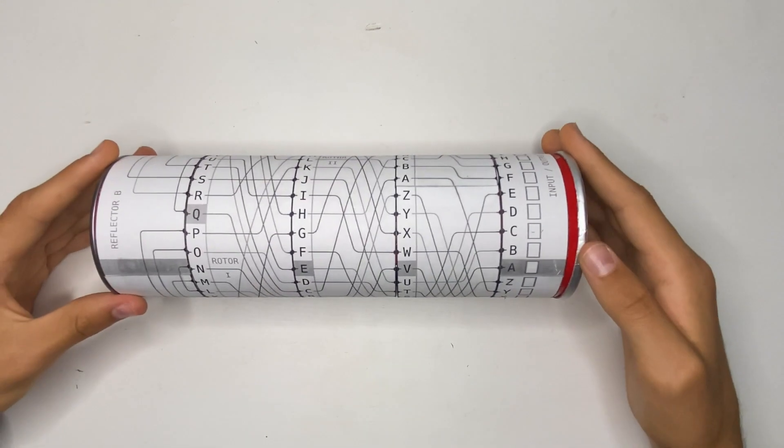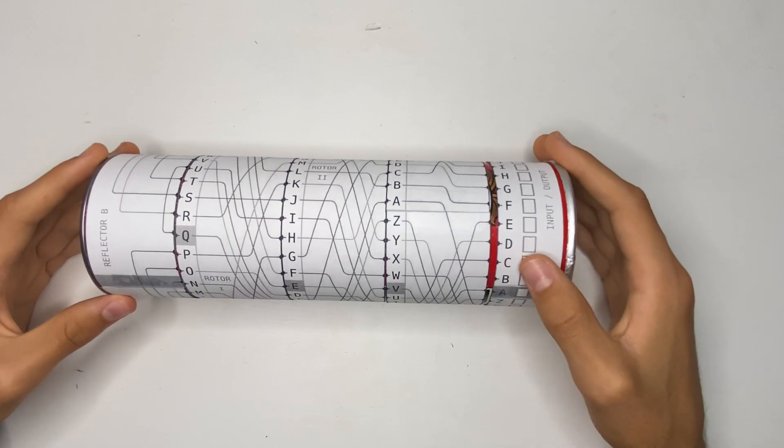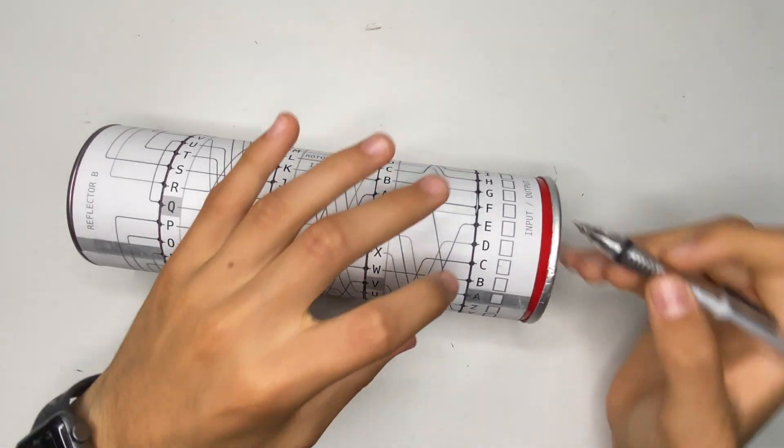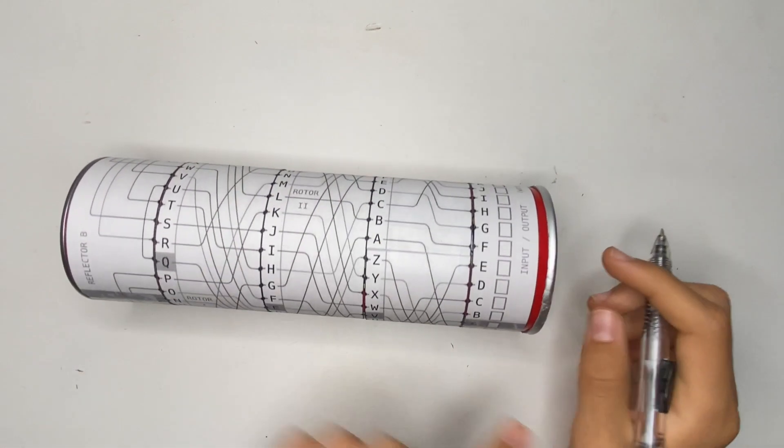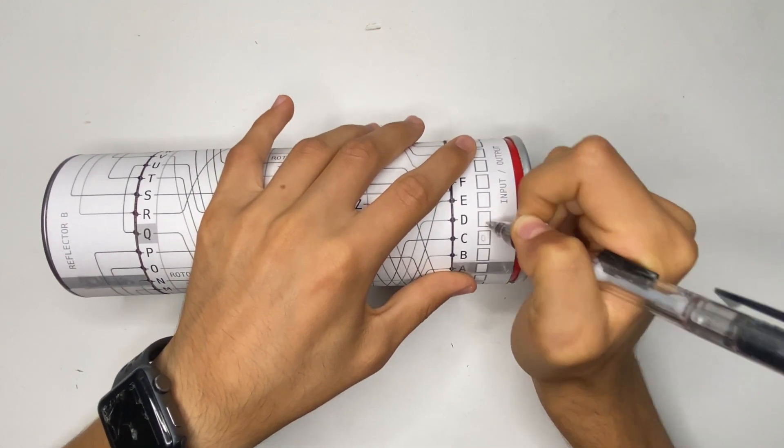Now you might remember from my last video that I mentioned these machines often have a plug board. And so how this is represented on this is, so let's say we wanted to connect C and D on the plug board. So we're going to write a D here, and a C here.